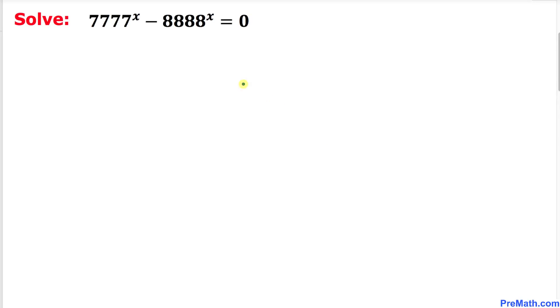Welcome to PreMath. In this tutorial, we are going to solve this given exponential equation: 7777 power x minus 8888 power x equal to 0.